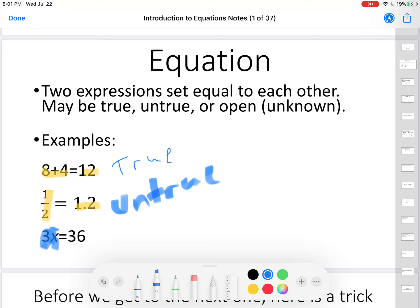3x is an expression, and 36 is an expression. Are they equal to each other? We have no idea. Might they be equal to each other? Yes. But, might they also not be? Yes. If x was equal to 12, they would be equal to each other, because 3 times 12 is 36. If x is equal to 10, 3 times 10 is 30, not equal to 36. We don't know whether this is true or not. That is why this is called an open equation.